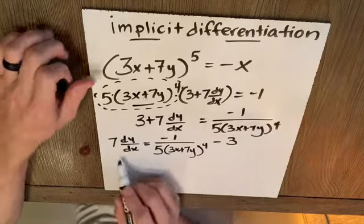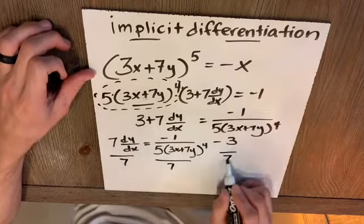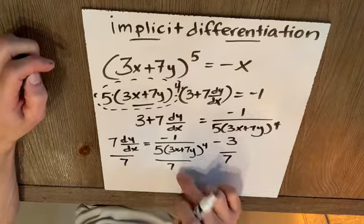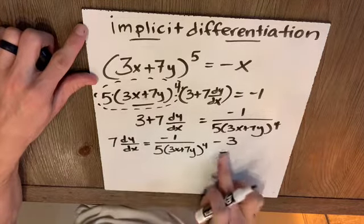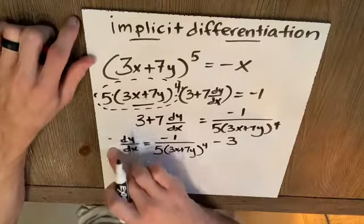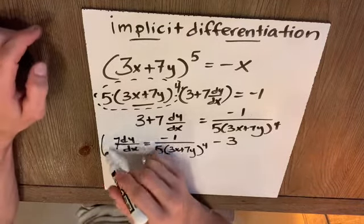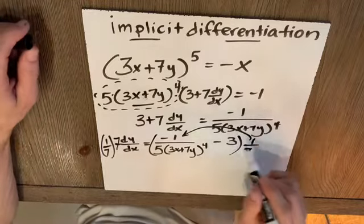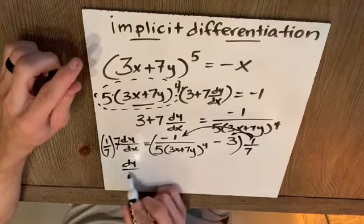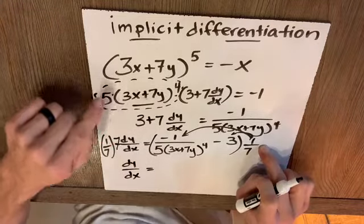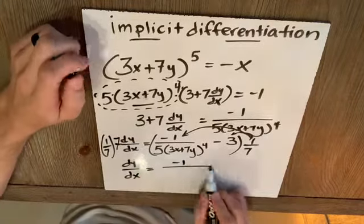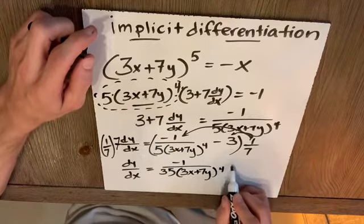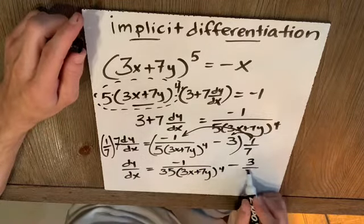If I say instead of dividing both sides by seven, now, I know over the years, some students can do this. But well, that's pretty easy, right? But this is where the problem is. So instead of dividing everything by seven, which is a reasonable move there, if I have seven dy/dx, I'm going to multiply both sides of the equation by the reciprocal one over seven, and I'm going to distribute that. And so I get dy/dx is equal to, now if I multiply one over seven times this fraction, I get negative one over seven times five is 35, three x plus seven y to the fourth minus, when I distribute here, I get again that three over seven.